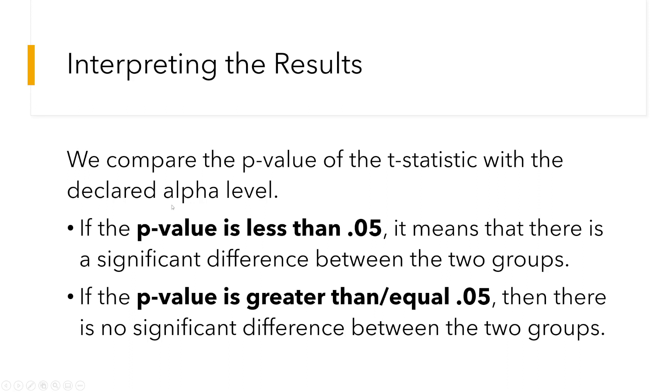So, in other words, if the p-value is less than 0.05, then it means that there is a significant difference between the two groups. But if the p-value is greater than or equal 0.05, then there is no significant difference between the two groups.